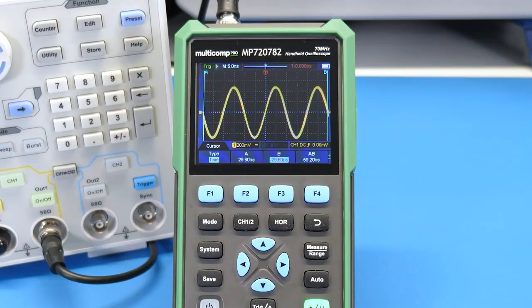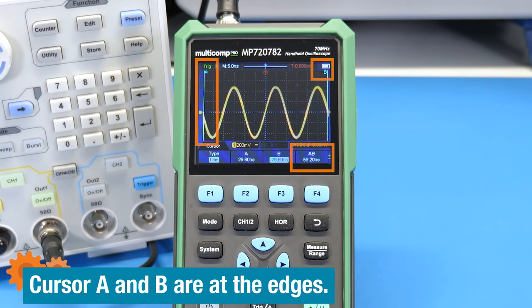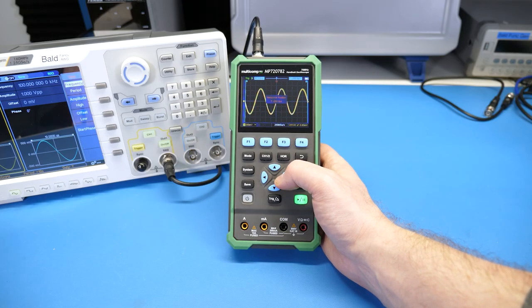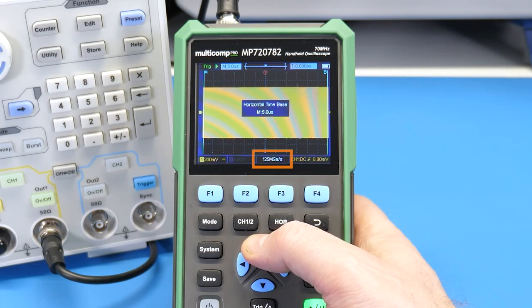And, if you need a reminder of the difference between bandwidth and sample rate, check the link below for a video on that. The fastest time-based setting is 5 nanoseconds per division. The screen has 12 divisions, so that comes out to be about 60 nanoseconds. If you zoom out, you get up to 24 microseconds of time before the sample rate drops.